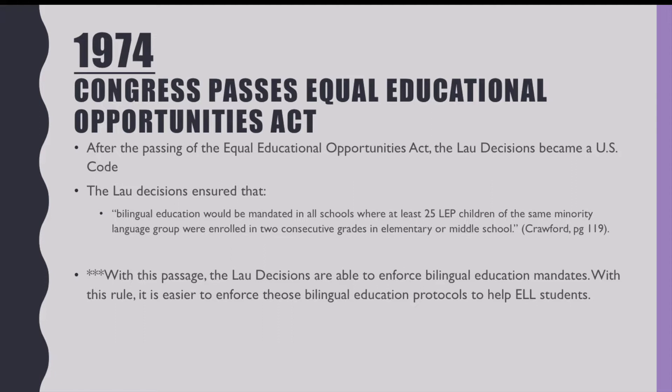Also in 1974, Congress passed the Equal Educational Opportunities Act. With its passing, the Lau decisions became U.S. code. It ensured that bilingual education would be mandated in all schools where at least 25 LEP children of the same minority language group were enrolled in two consecutive grades in elementary or middle school. There was backlash from many schools and parents, but with the passage, the Lau decisions were able to enforce bilingual education mandates in districts, making it easier to enforce bilingual education protocols to help ELL students.